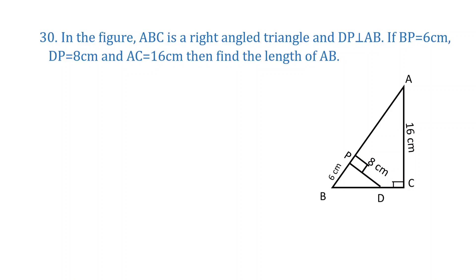The 30th question is: in the figure, triangle ABC is a right angle triangle. You can observe angle C is 90 degrees. DP is perpendicular to AB. BP is 6 cm, DP is 8 cm, and AC is 16 cm. Find the length of AB.